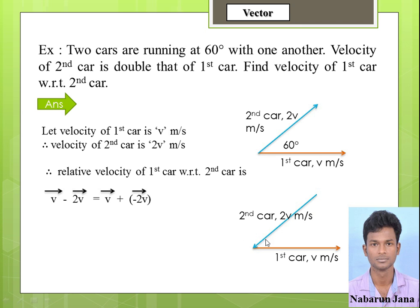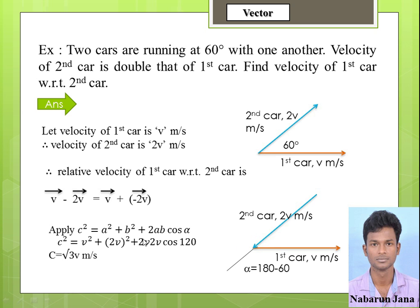Now we have to find the angle. To find the angle, we make both arrowheads point outward from the common point, so we extend this vector. The original angle between the cars is 60 degrees, so after extension the angle between the vectors becomes 180 minus 60 equals 120 degrees. Applying c² = a² + b² + 2ab cos(alpha): c² = v² + (2v)² + 2·v·2v·cos(120°). This gives c = √3 · v meters per second. So the relative velocity of the first car with respect to the second car is √3 v meters per second.